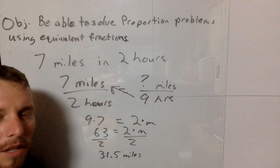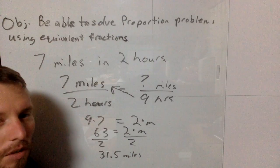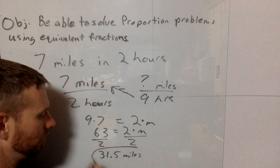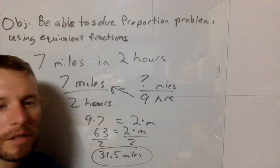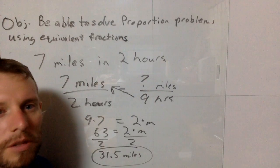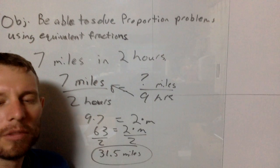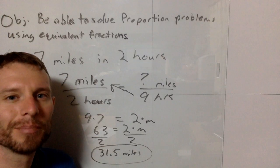If I hike 9 hours at that rate, I'll go 31.5 miles, which is not too shabby. Those are two word problems using proportions and equivalent fractions. Hope you found this video useful. See you next time!